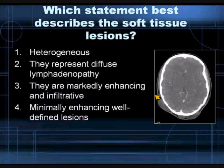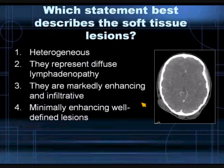Next question: Which statement best describes the soft tissue lesions — the soft tissue masses the patient has? Do you feel that they're heterogeneous? They represent diffuse lymphadenopathy? They are markedly enhancing and infiltrative masses? Or they are minimally enhancing well-defined masses? Please enter your choice.